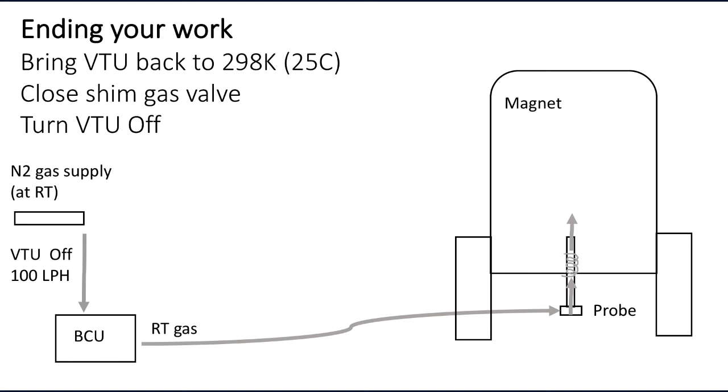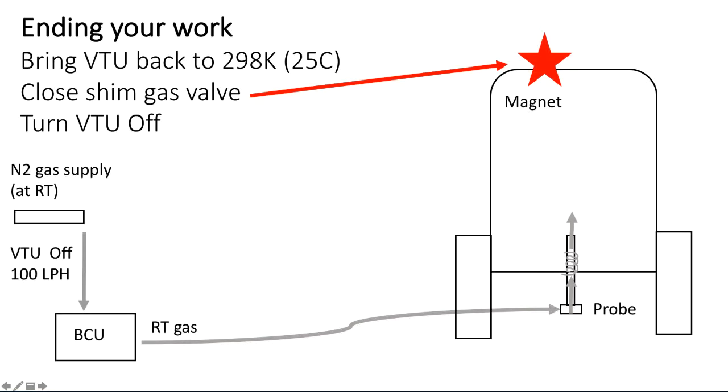After you brought spectrometer to 25 degrees C, your next step is to close the shim gas valve and then to turn off the VTU.